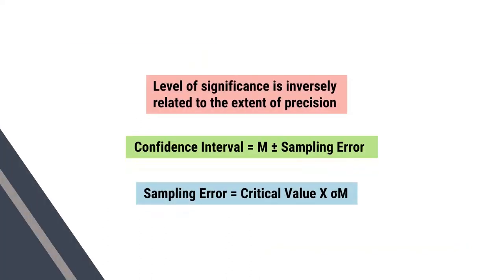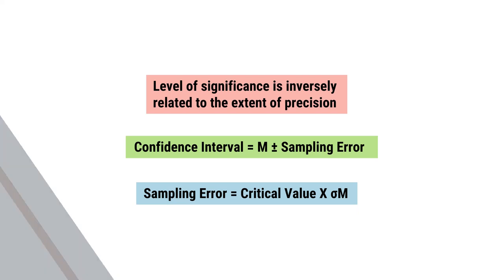Level of significance is inversely related to the extent of precision. Confidence interval is equal to mean plus or minus sampling error. Sampling error is equal to critical value multiplied by standard error of mean.